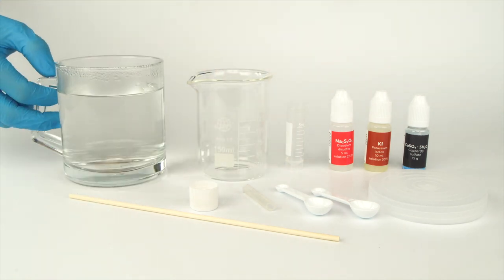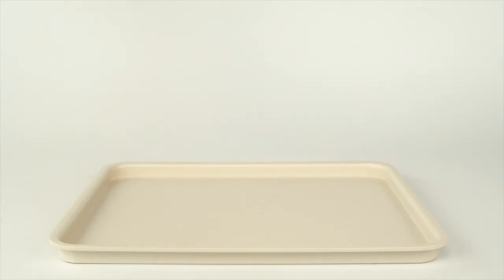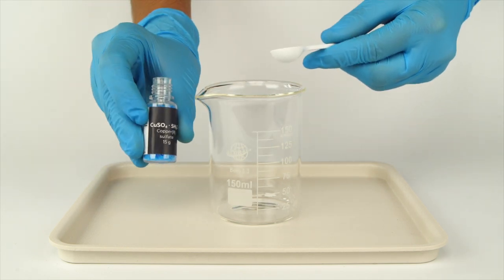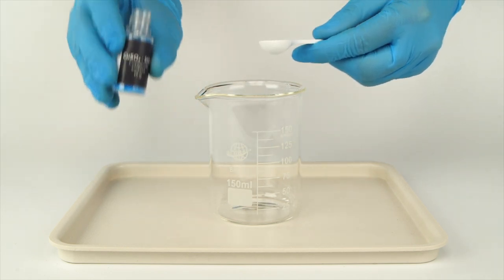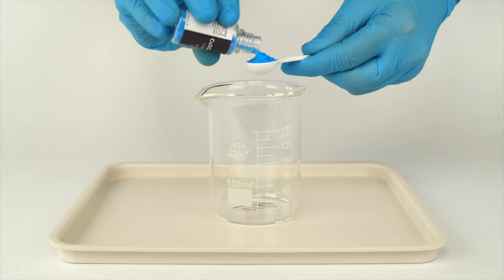Boil some water in advance. Keep in mind that you'll need to rinse your plastic items with water at the end of the experiment. Pour one big spoon of copper sulfate from the bottle with the black sticker into the beaker.